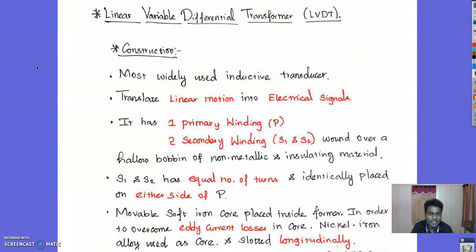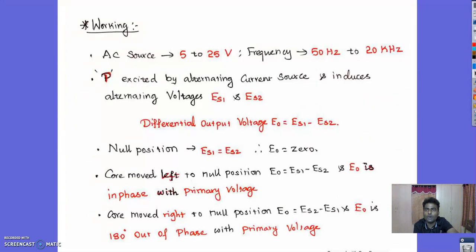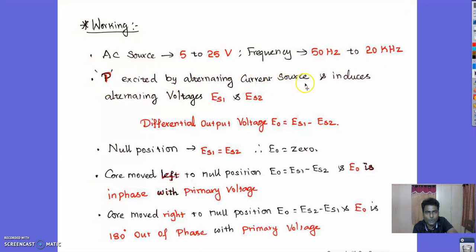The movable soft iron core is placed in the former to overcome eddy current loss. The core is made of nickel-iron alloy and is slotted longitudinally. The primary winding is wound in the center and secondary windings are wound on either side of the primary winding. For the working of the LVDT, an AC source of 5 V to 25 V and frequency from 50 Hz to 20 kHz is applied to the primary winding, which excites it and induces alternating voltages ES1 and ES2 in the secondary windings.